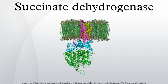Succinate dehydrogenase, or succinate coenzyme Q-reductase, or respiratory complex 2, is an enzyme complex bound to the inner mitochondrial membrane of mammalian mitochondria and many bacterial cells. It is the only enzyme that participates in both the citric acid cycle and the electron transport chain.